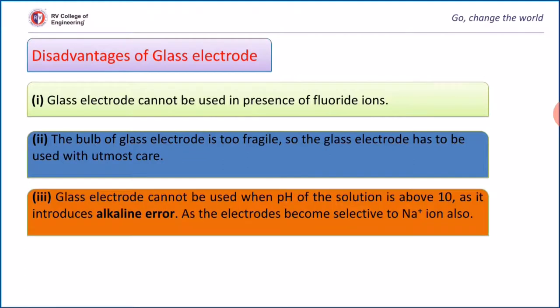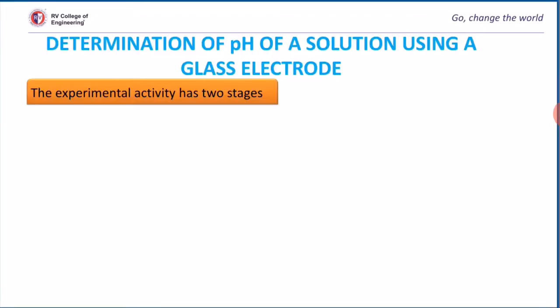Third, glass electrode cannot be used when the pH of solution is above 10 as it introduces alkaline error. The electrode becomes selective toward Na+ ions also, which results in wrong results. Hence, we should avoid pH more than 10.